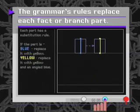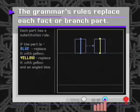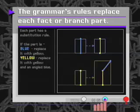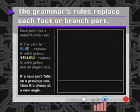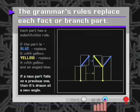If we use the blue and yellow parts we showed earlier, and apply a grammar which has two substitution rules, the colors would be replaced as indicated by the diagram on the right. If the part is blue, replace it with a yellow. If the part is yellow, replace it with a yellow and an angled blue. If a new part falls directly on a previous one, then it is drawn at a different angle.